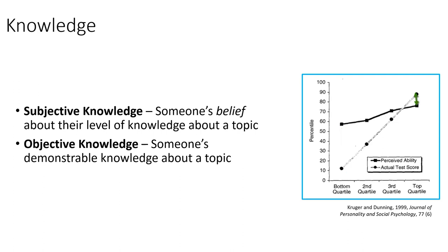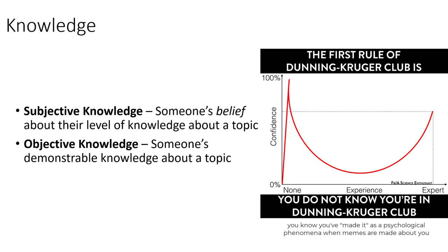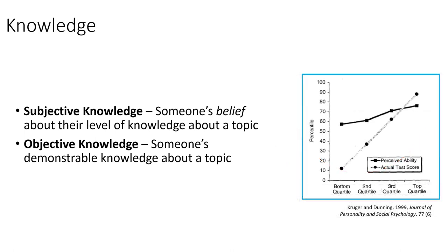At the top end, we also see a miscalibration of subjective and objective knowledge, but not quite as egregious. Those individuals who actually knew a large amount only estimated themselves to perform slightly better than average. There is a lot of debate in the literature about what's driving the Dunning-Kruger effect, or this mismatch between subjective and objective knowledge. For our purposes, it's enough to say that there typically is a substantial difference between the two — so as marketing researchers, we need to be very clear about which one we intend to measure, because measuring one is unlikely to give us information about the other.